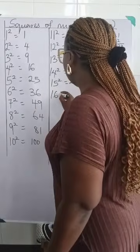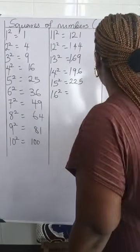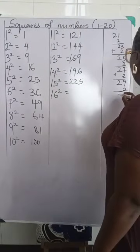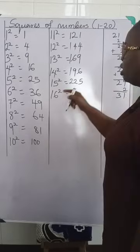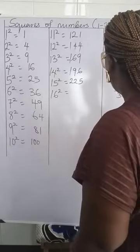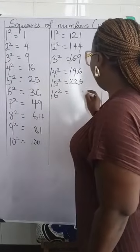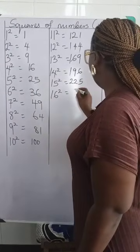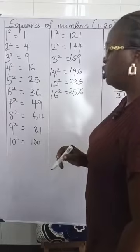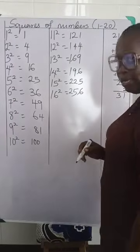We'll go over to the next number, which is 16 squared. You add your 2 here and you'll have 31. 31 add it to 225. We're going to have 1 plus 5 is 6. 3 plus 2 is 5. And you bring down your 2, which is 256, right?